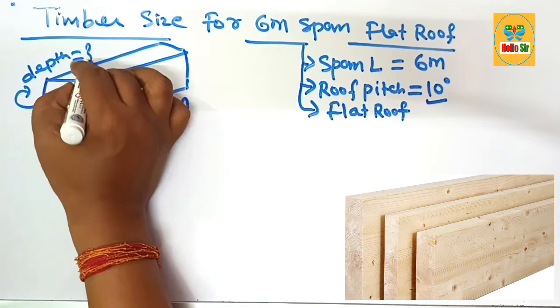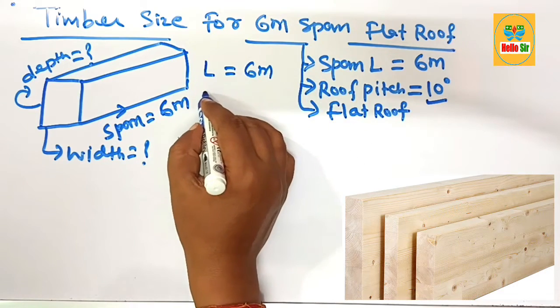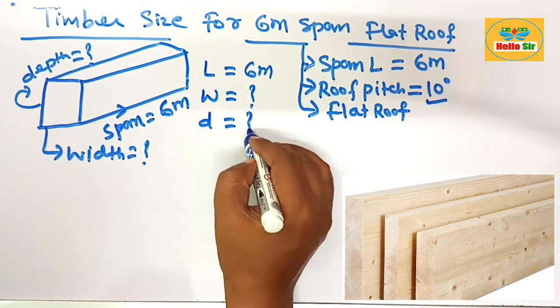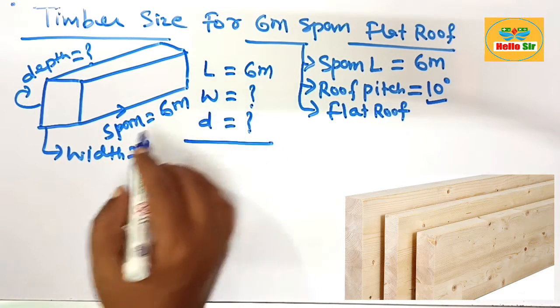Here the length of span is about 6 meter and the width you have to find out and the depth you have to calculate this one. This is the size of timber including width and depth section.